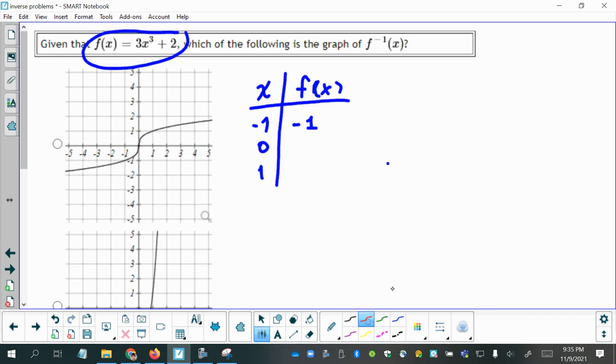Okay, now on my inverse function, though, remember the relationship of inverse functions to the original function that they are inverting, that they can invert or undo, is to switch the x and y coordinates. Now this happens to be negative 1, negative 1, so switching them doesn't change anything. I still have negative 1, negative 1.